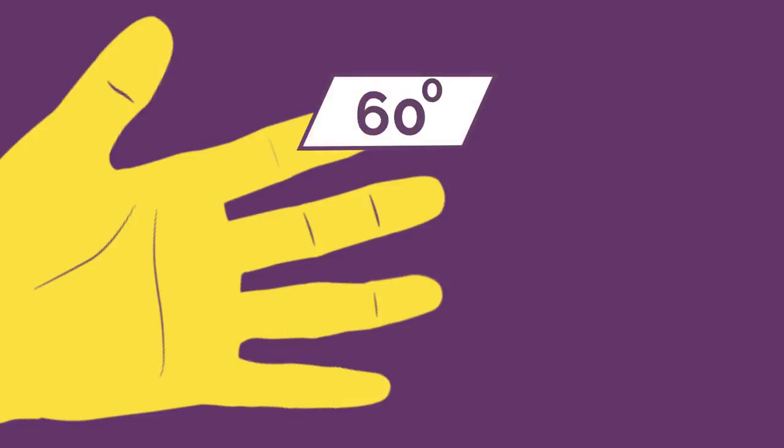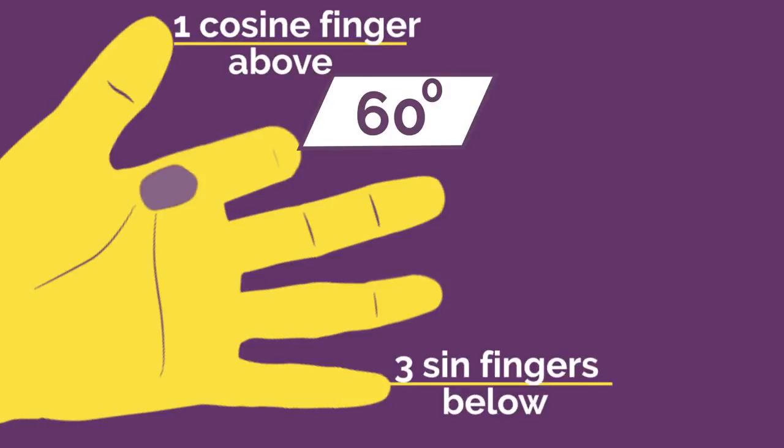So let's find tan 60. Let's bend down our 60 degree finger. We've got one cosine finger above and three sine fingers below.